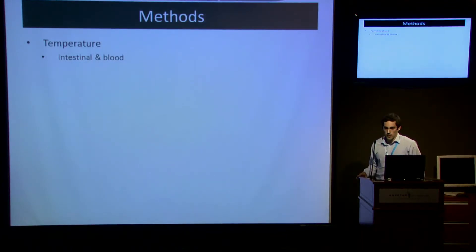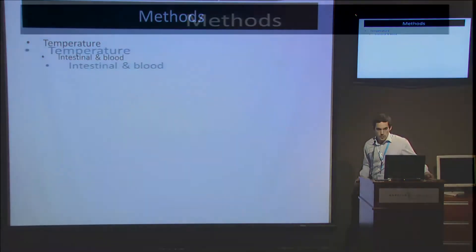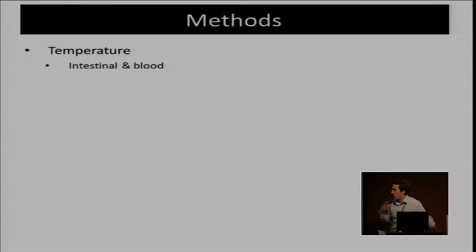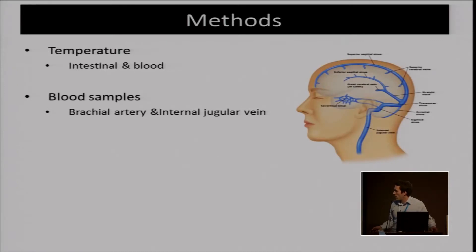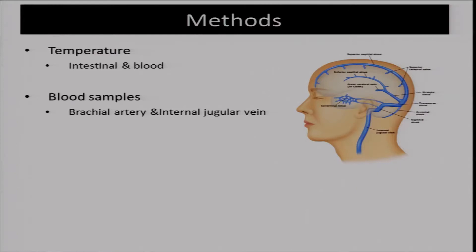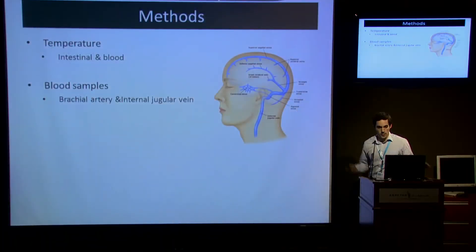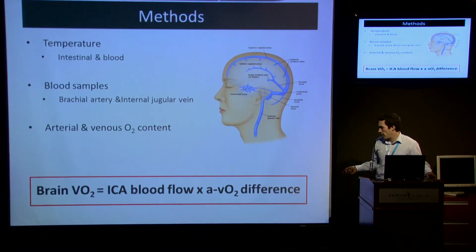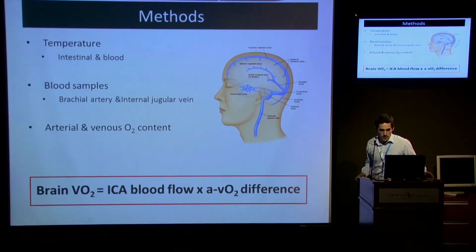Other methods: we measured intestinal blood temperature, our representation of core temperature, with an ingestible telemetry pill. Blood temperature was measured with a thermistor placed through the catheter into the internal jugular vein. Brachial artery blood samples and internal jugular venous blood samples. Just to clarify, internal jugular vein blood samples were measured high up and are reflective of the blood draining the brain. This allowed us to calculate our brain AVO2 difference. Arterial and venous oxygen content were measured, and then we were able to calculate brain oxygen uptake using our blood flow measurements and our AVO2 difference measurements.